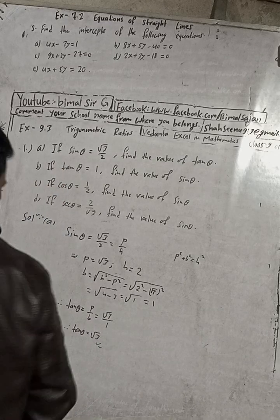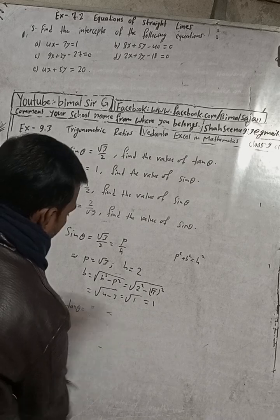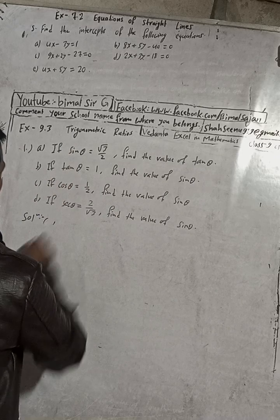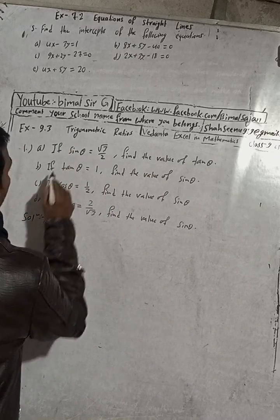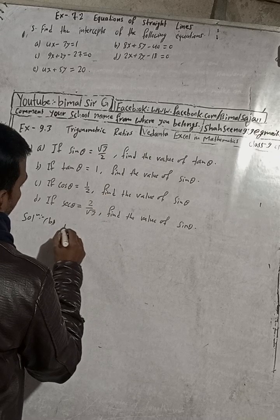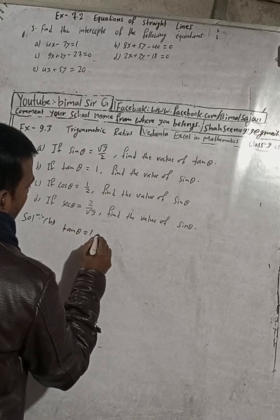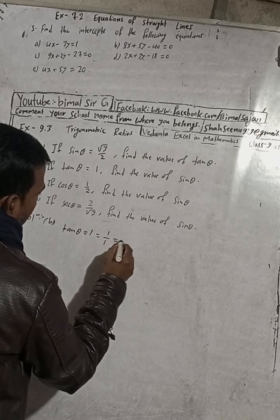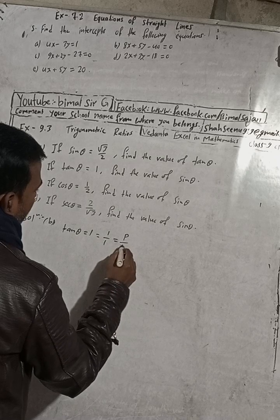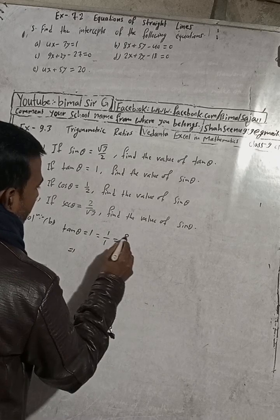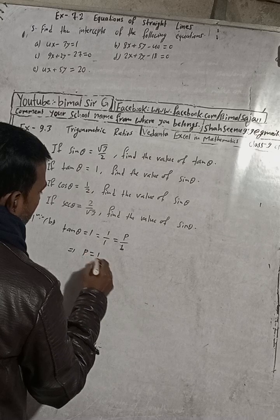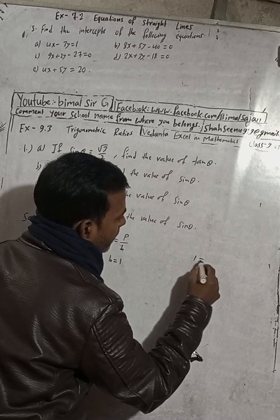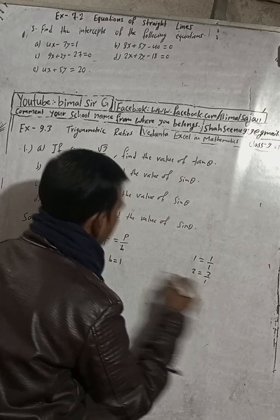Now part B. The question is: if tan θ is equal to 1, find the value of sin θ. Given tan θ = 1, this can be written as 1 by 1, because tan θ equals P by B. So P by B equals 1 by 1, meaning P equals 1 and B equals 1.